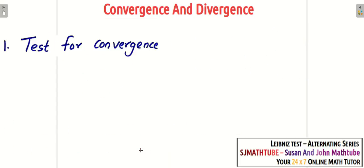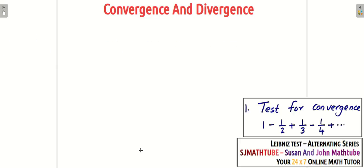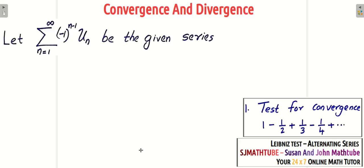This is one of the easiest tests among the series tests. Let's start with a question. Let sigma (-1)^(n-1) * un be the given series, where un = 1/n. The terms are like 1/1, 1/2, 1/3, 1/4, 1/5 — and the general pattern gives us 1/n.